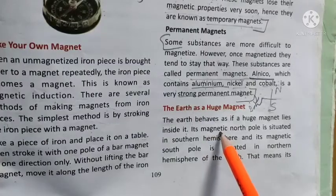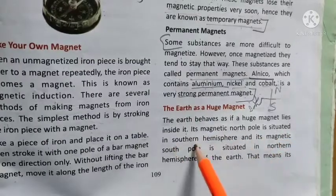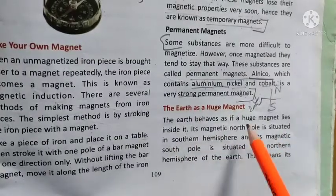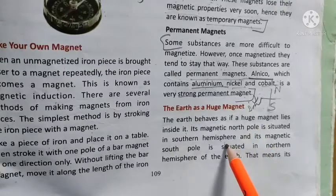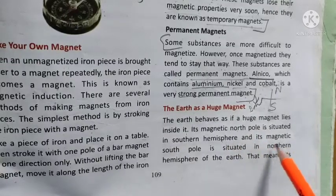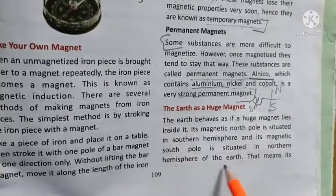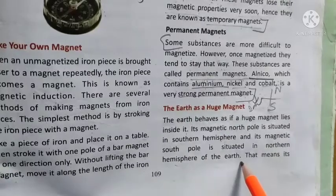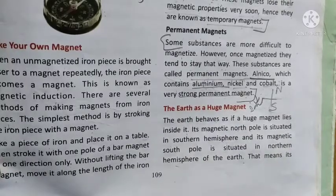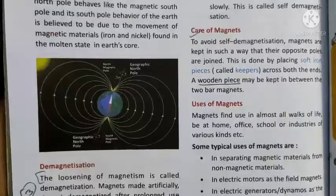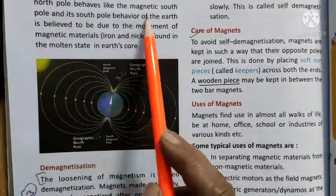Its magnetic north pole is situated in the southern hemisphere. And its magnetic south pole is situated in the northern hemisphere of the earth. That means its north pole behaves like the magnetic south pole.